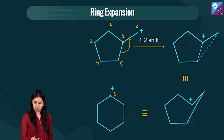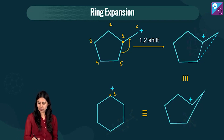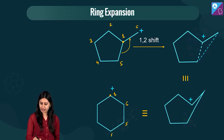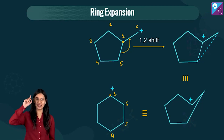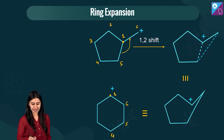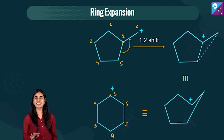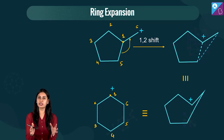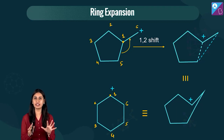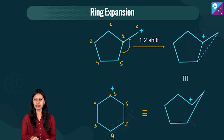A bond has been formed between carbons 5 and 6, giving us a six-membered ring. The six-membered ring is any day more stable than a five-membered ring, so the expansion is favorable here. Both conditions are adhered to — there is less ring strain in the cyclohexane ring, confirming the ring expansion is valid.